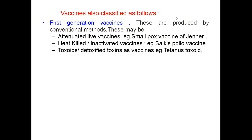Vaccines are also classified by generation. First generation vaccines are produced by conventional methods. These may be attenuated or weakened live vaccines — for example, the smallpox vaccine of Jenner. Then heat-killed or inactivated vaccines — for example, Salk polio vaccine. Then toxoids or detoxified toxins as vaccines — for example, tetanus toxoid.